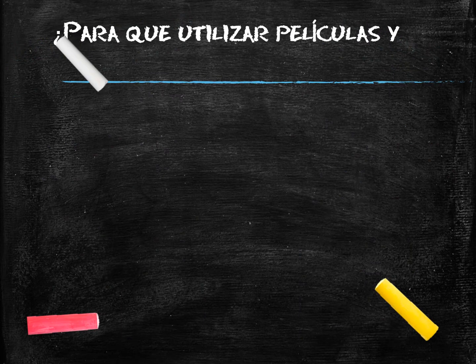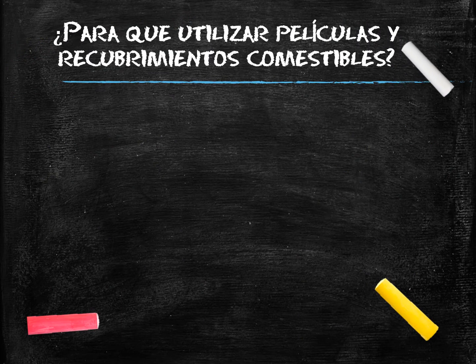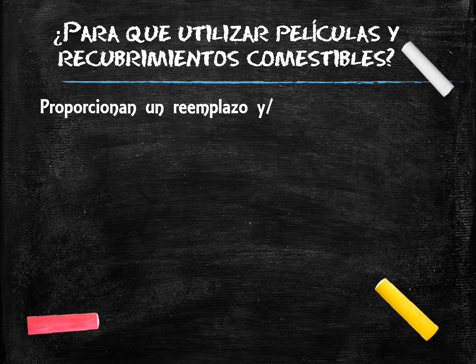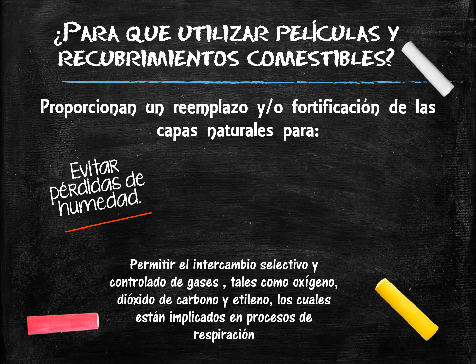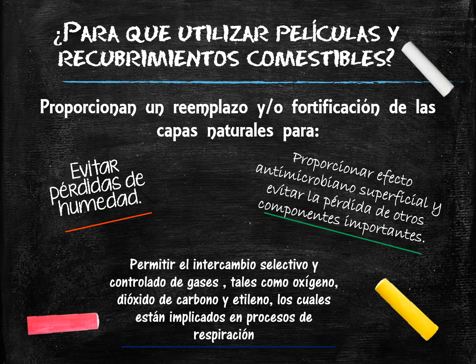Why should we use edible films and coatings? Edible films provide replacement and/or fortification of natural layers to prevent moisture losses, while selectively allowing for controlled exchange of important gases such as oxygen, carbon dioxide, and ethylene, which are involved in respiration processes. A film or coating can also provide surface sterility and prevent loss of other important components.